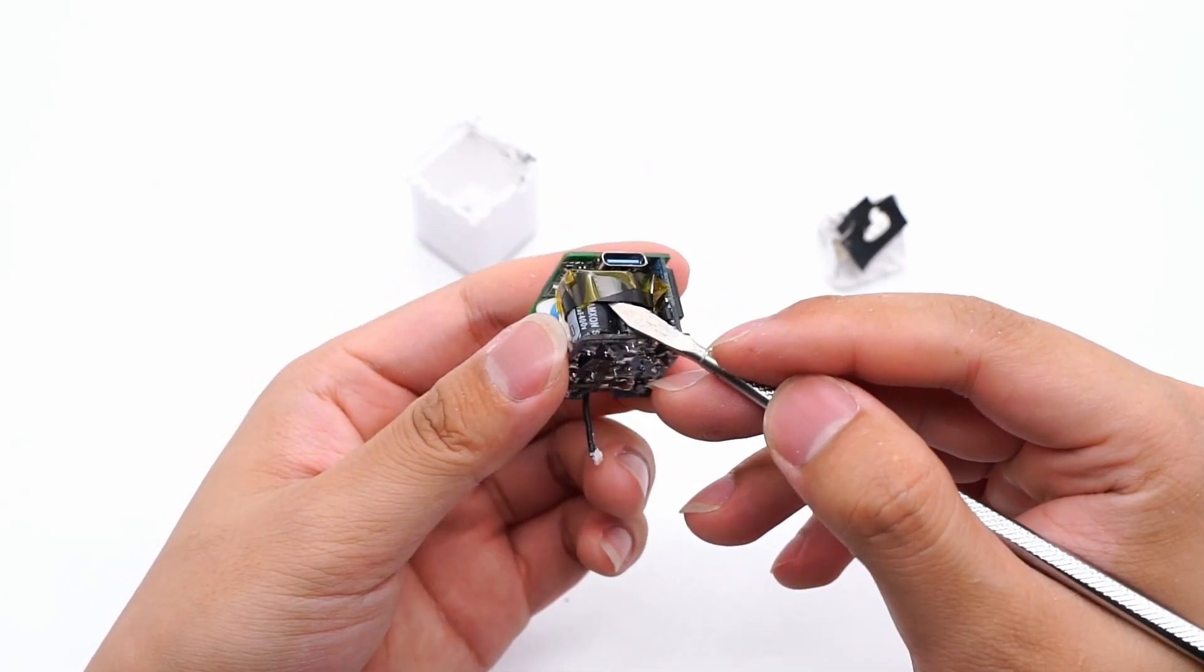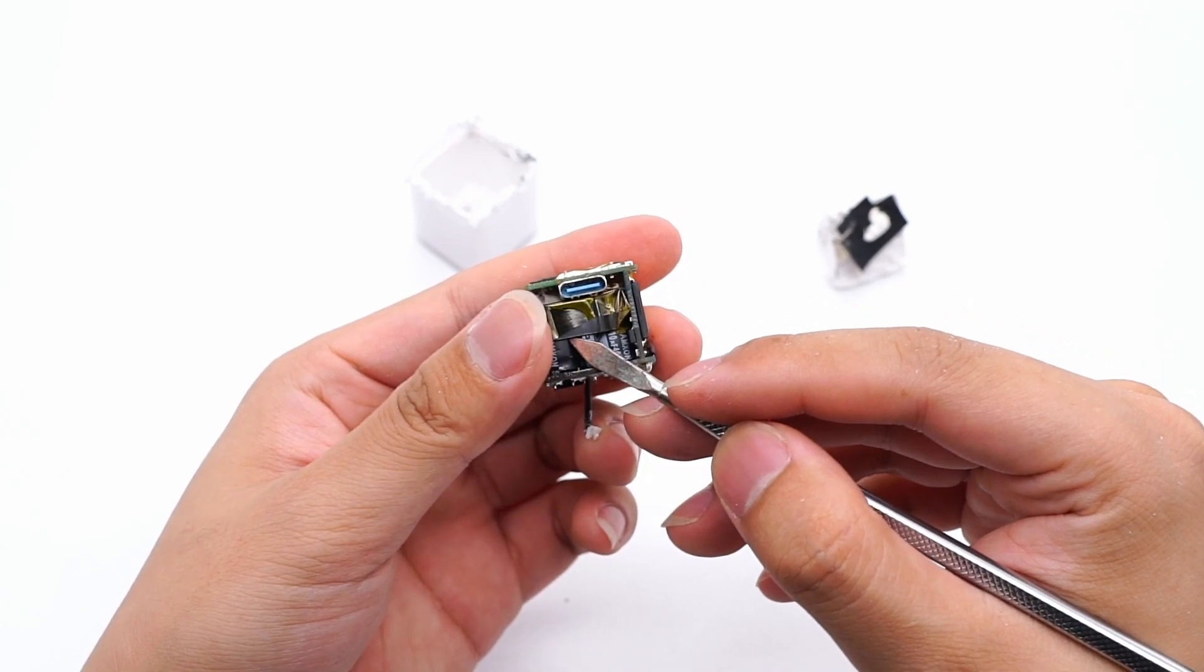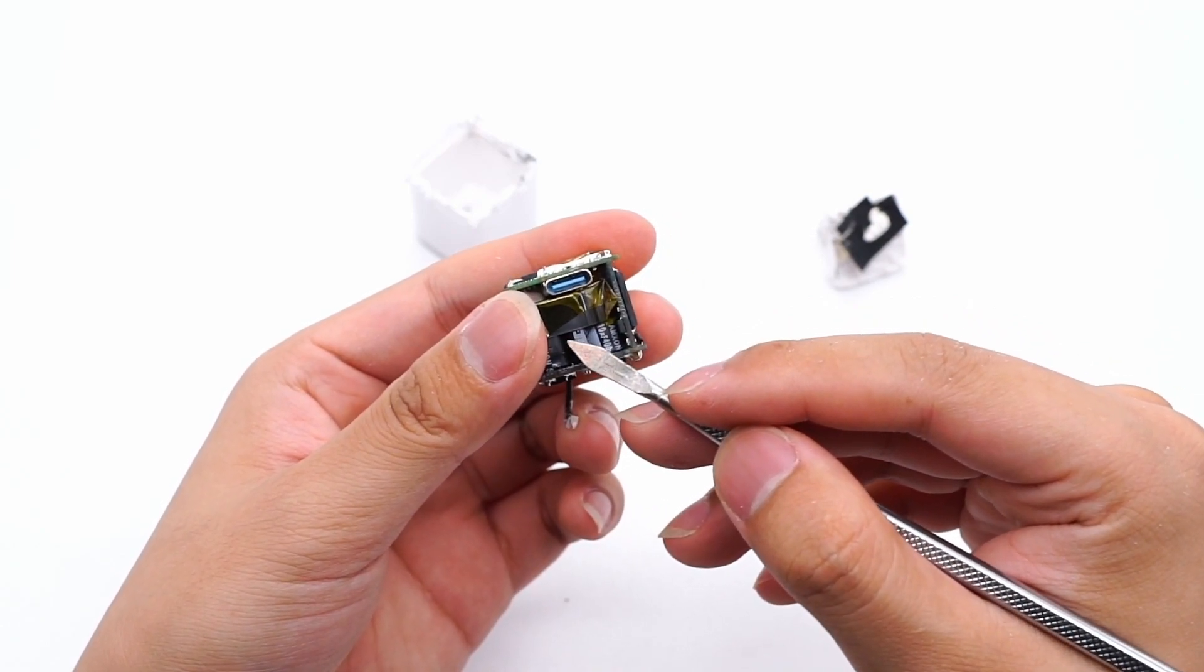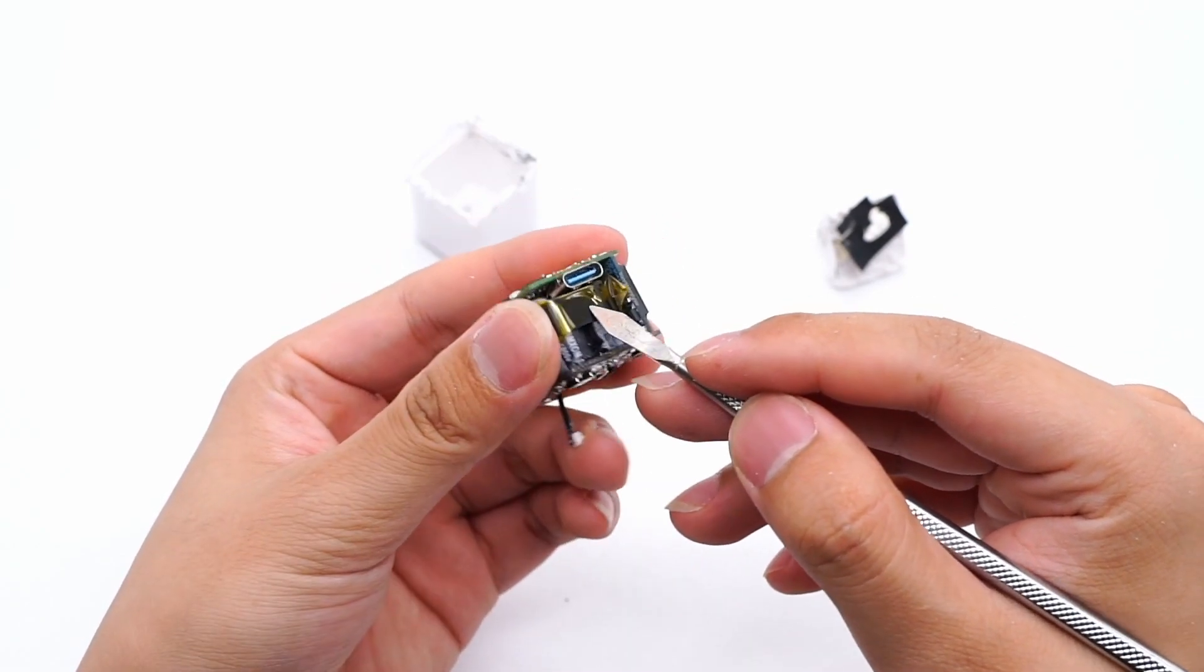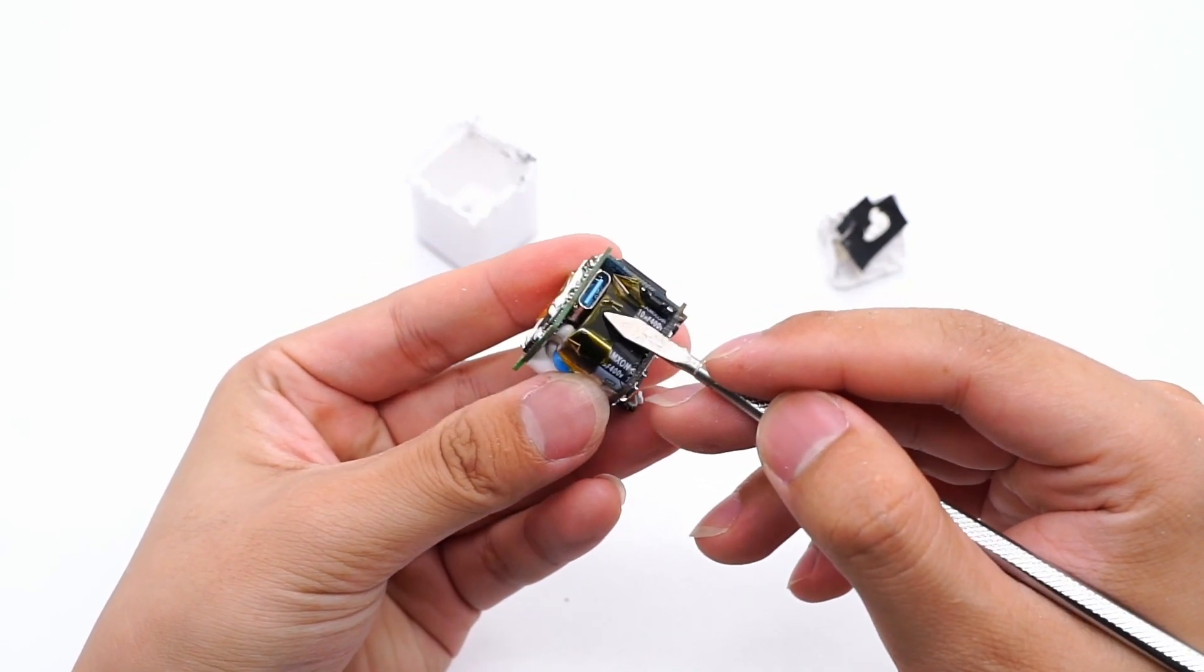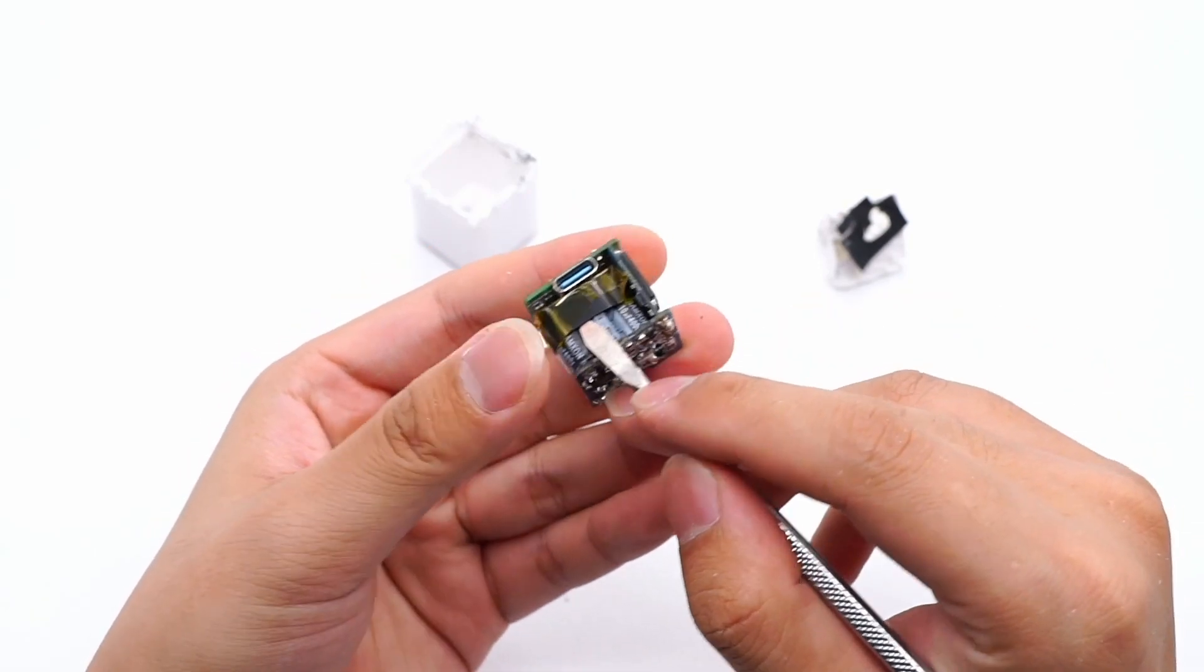The two electrolytic capacitors for high-voltage filtering on both sides come from Rubycon. 400V, 10µF. The capacitor of master control chip is in the middle, which comes from Nichicon. 50V, 10µF.